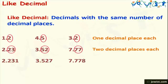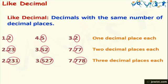One more example: we have the numbers 2.231, 3.527, and 7.778. All these three numbers have three decimal places each. Again, even these numbers are like decimal numbers.